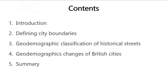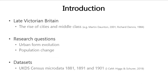These are the contents I'm going to cover in the next 20 minutes or so, starting from the background introduction, then to methods and findings, and it will be concluded with a few summary points. Late Victorian Britain has seen the rise of many industrial cities and the middle-class population, which has attracted attention from many historians and also historical geographers. We would like to contribute to this field from a quantitative geographer's perspective by applying modern neighborhood classification techniques to the historical context and answering questions like how urban forms evolved during that period and how the population changed in terms of their demographics.